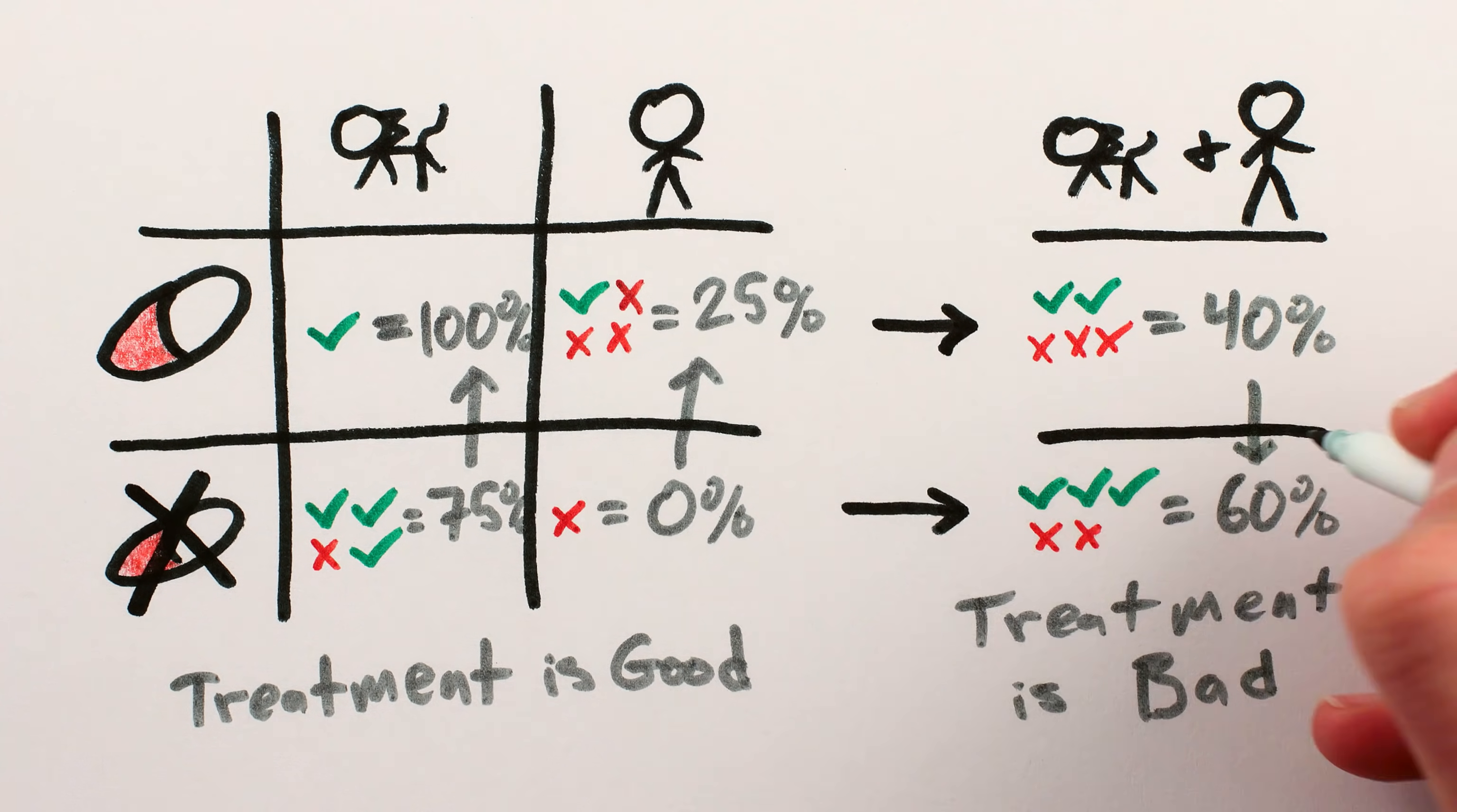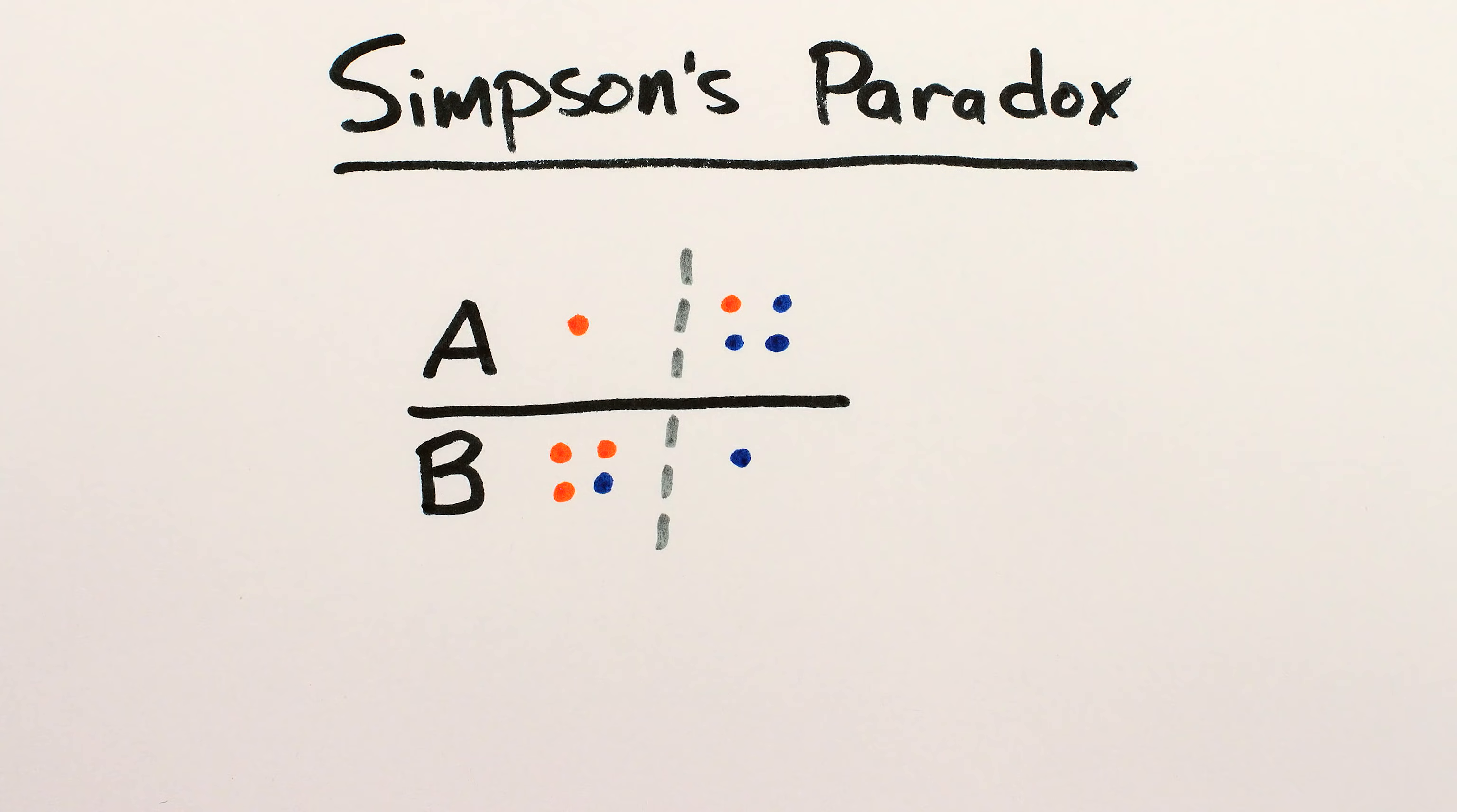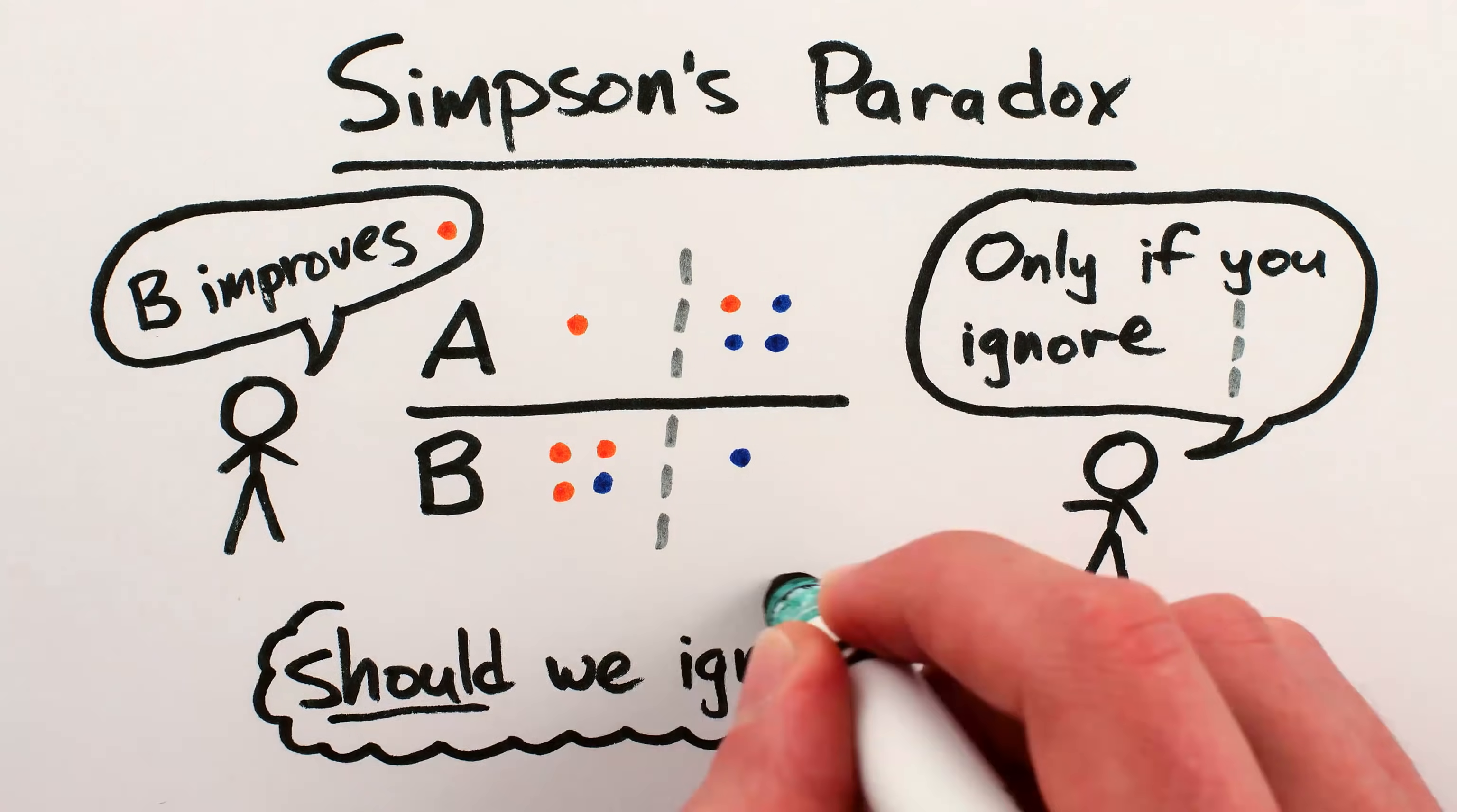Which makes it seem like the treatment reduces the chances of recovery. So which is it? This is an illustration of Simpson's paradox, a statistical paradox where it's possible to draw two opposite conclusions from the same data depending on how you divide things up.